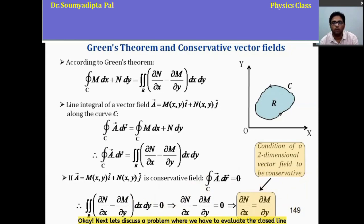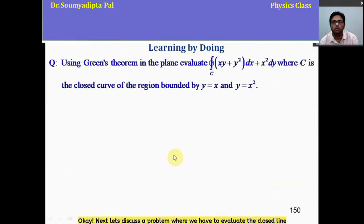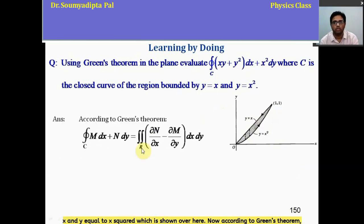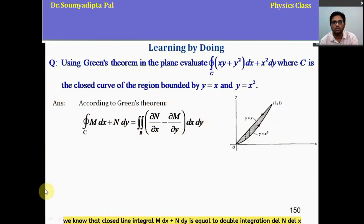Next, let us discuss a problem where we have to evaluate the close line integration of xy plus y square dx plus x square dy over the closed curve of the region bounded by y equal to x and y equal to x square, which is shown over here. Now, according to Green's theorem, we know that closed line integral m dx plus n dy is equal to double integration del n del x minus del m del y over the region bounded by these two curves. Here, we will calculate this double integral to find out this closed line integral.